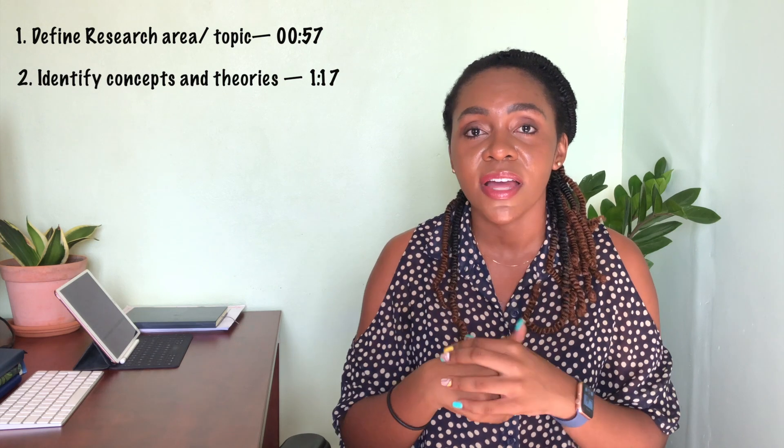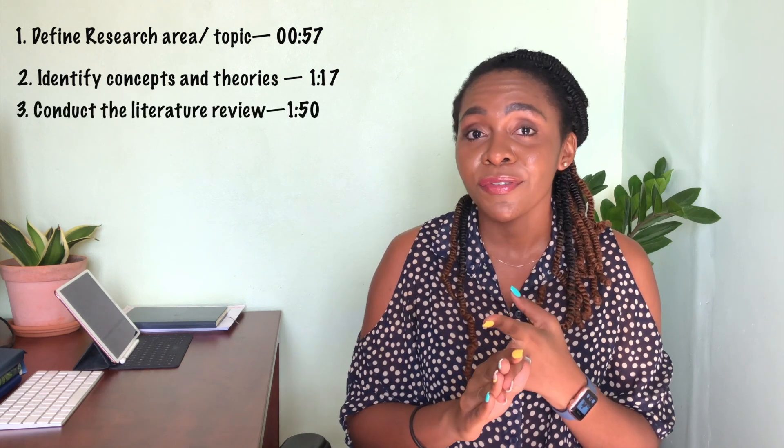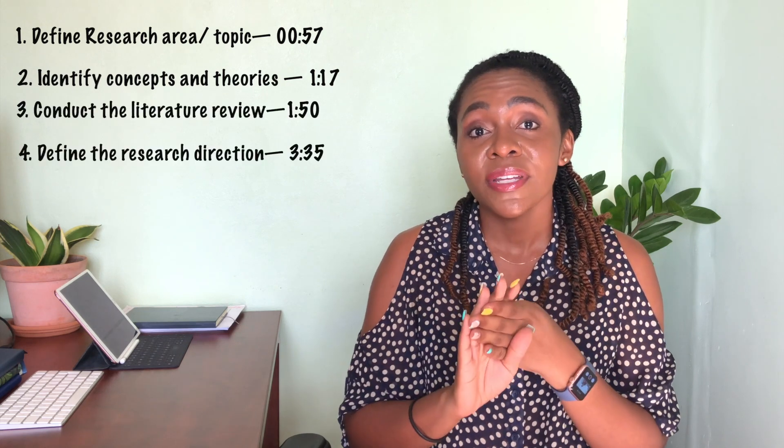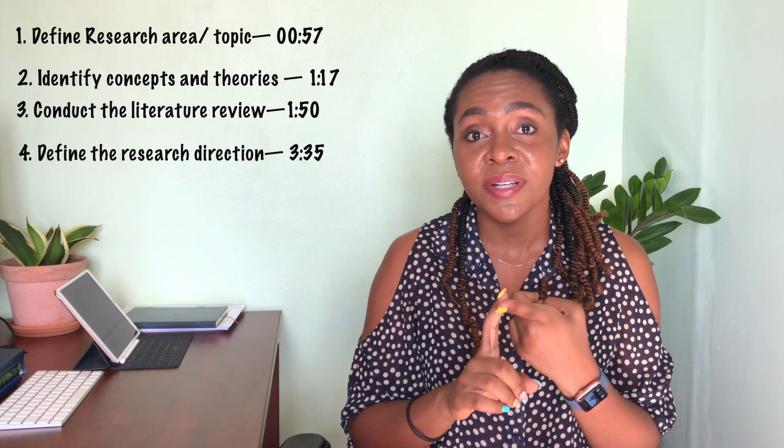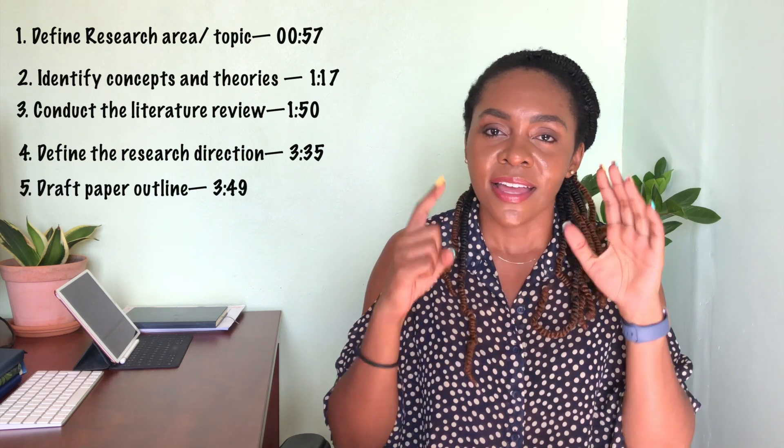I'm going to share the six steps I use to move from an idea to an actual paper. Those steps are: identify your broad topic, identify the concepts and theories around that topic, conduct a literature review, decide on a direction of work, plan the research paper structure, and — one of the hardest things — write that paper. So let's get into it.